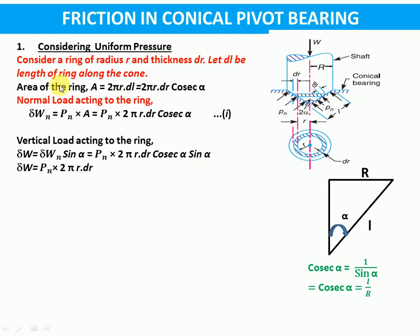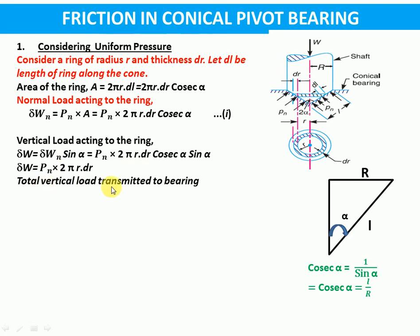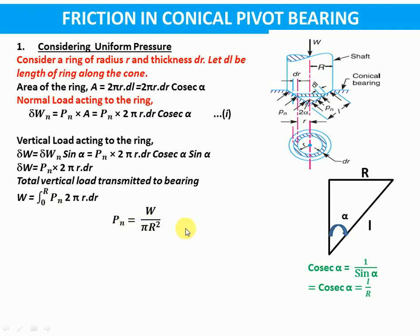So what we have done is: taken an elementary ring, found the normal load as pressure times area, then found the vertical load using trigonometric relations. Now the total vertical load transmitted to the bearing will be the integration of dW from 0 to R. So W equals pn times πR², or we can write pn equals W upon πR², same as we did in the flat pivot bearing. But here the concept is that the normal load is normal to the slant and we are taking the vertical load.